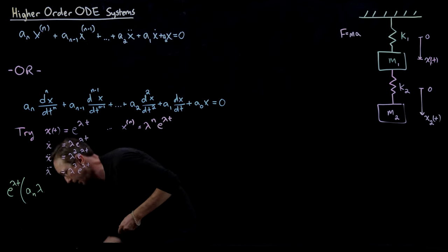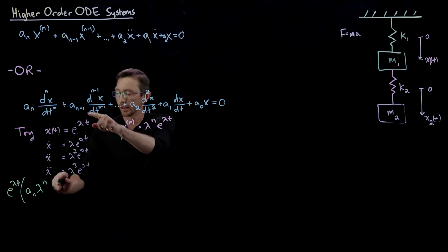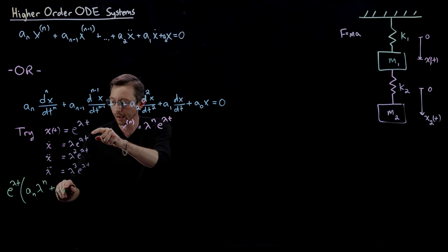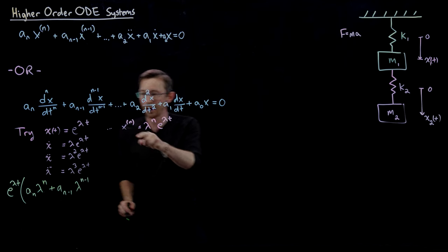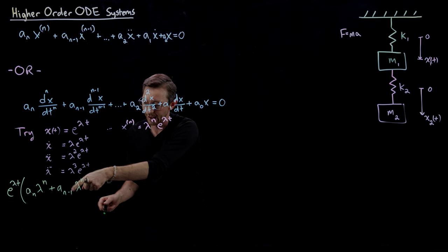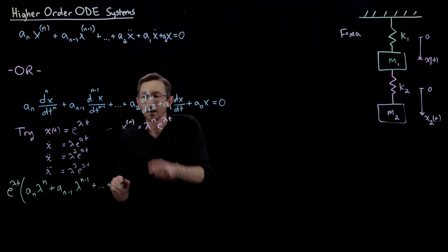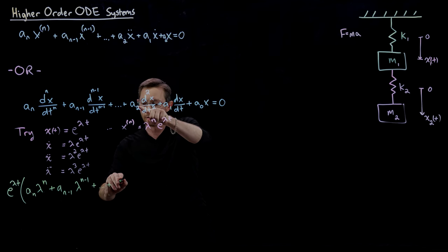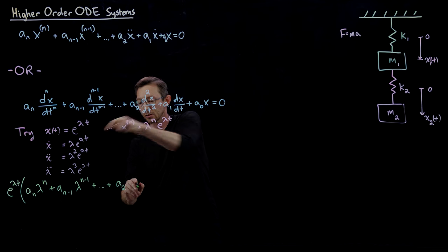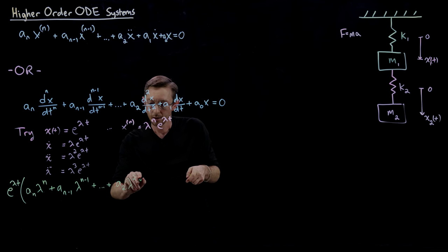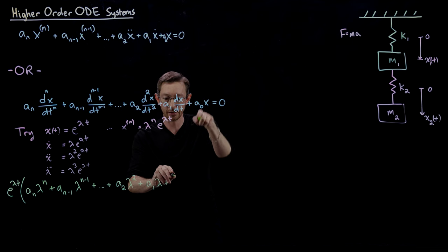So this is aₙ λⁿ plus aₙ₋₁ λⁿ⁻¹ — that coefficient times λ to the n minus one power — plus aₙ₋₂ λⁿ⁻² plus dot dot dot, plus a₂ λ² plus a₁ λ plus a₀. All of that equals zero.